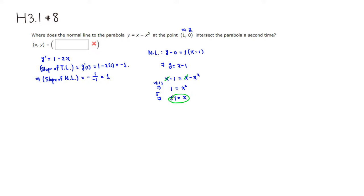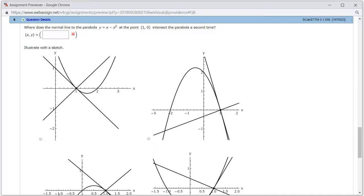So x = negative 1 is what we're looking for. The corresponding y value is y = negative 1 minus (negative 1)², which gives negative 2. So the second intersection point is (negative 1, negative 2). Let's type that in: negative 1 comma negative 2.